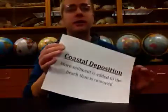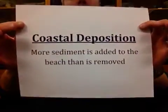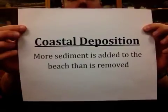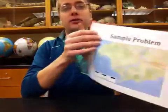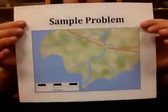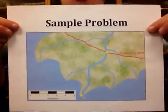Coastal deposition is looking at shorelines where there is more sediment being added than is being removed from the beach. In these locations we'd actually be growing new land out into the body of water. It could be the ocean, it could be a lake or an inland sea.